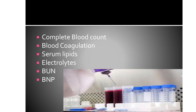Next is complete blood count. CBC identifies the total number of white and red blood cells together with platelets. It also measures hemoglobin and hematocrit. In red blood cells, a decrease might be indicative of rheumatic heart disease and infective endocarditis. An increase in red blood cells may be characterized by conditions with inadequate tissue oxygenation.